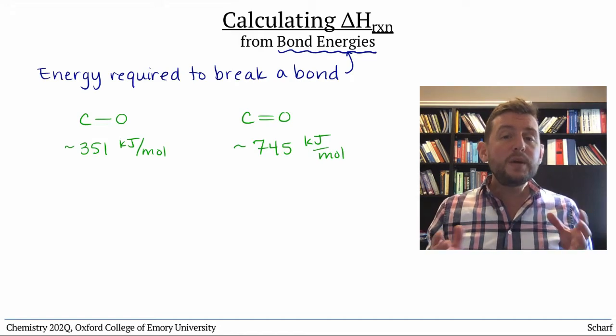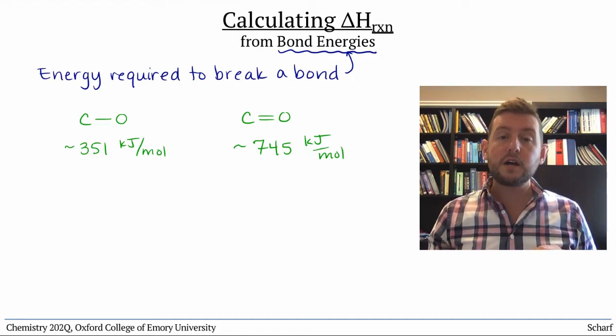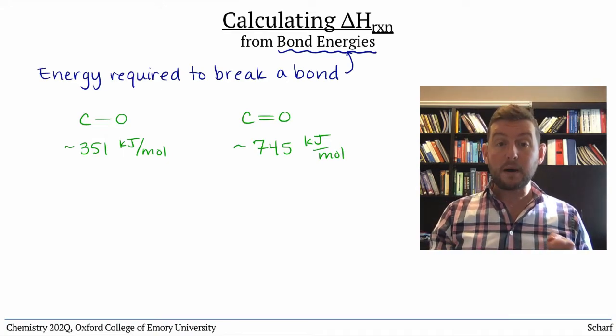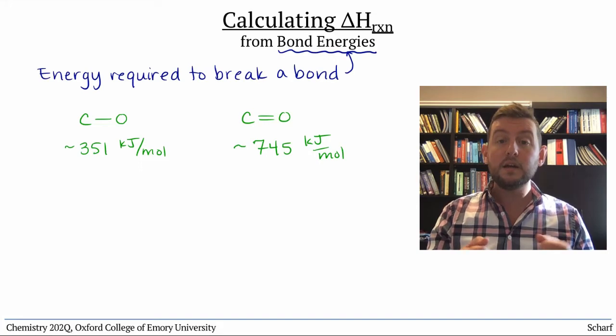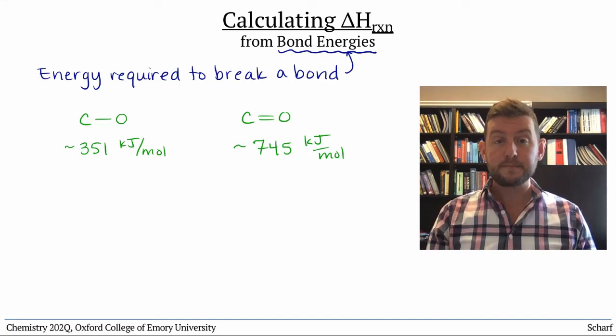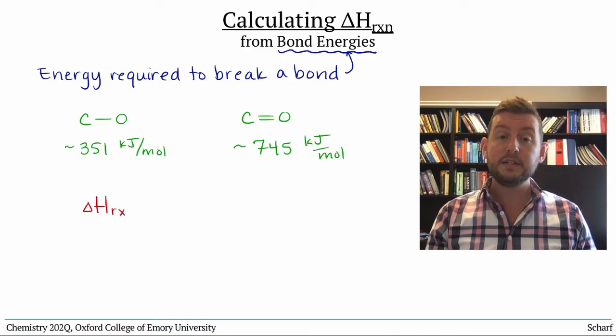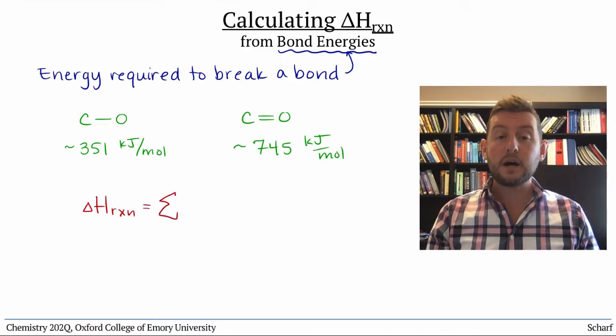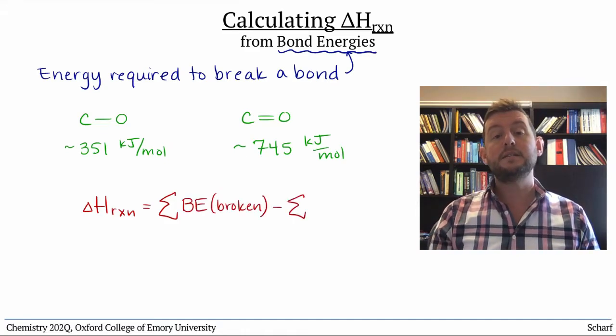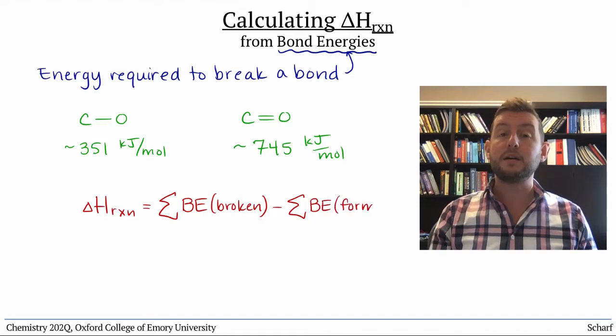So if we know the chemical structures of the reactants and products in a chemical reaction, and we can identify which specific bonds are made and broken, we can calculate the reaction enthalpy using the equation: ΔH_rxn equals the sum of the bond energies of the bonds broken minus the sum of the bond energies of the bonds formed.